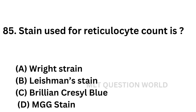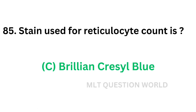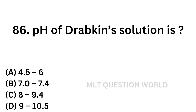Question number 85: Stain used for reticulocyte count is. Option A: Wright stain. Option B: Leishman stain. Option C: brilliant cresyl blue. Option D: MGG stain. Wright stain is used to differentiate nuclear and cytological morphology of cells. Leishman stain is used for peripheral smear and malarial parasite. Brilliant cresyl blue is for reticulocyte count and MGG is for bone marrow smears. So the correct answer is Option C, brilliant cresyl blue. New methylene blue can also be used.